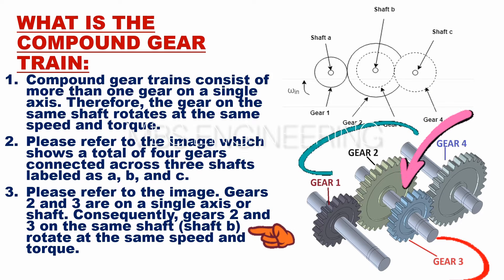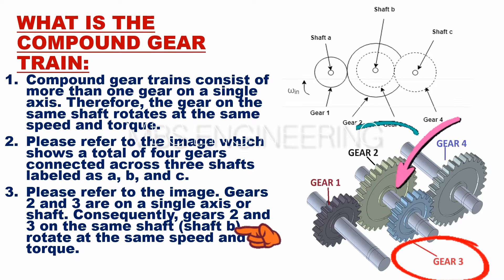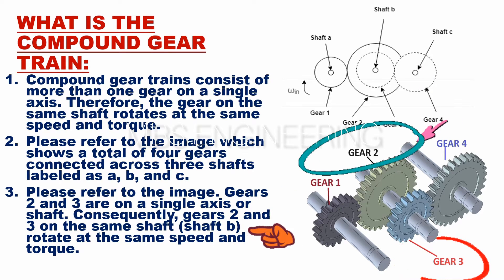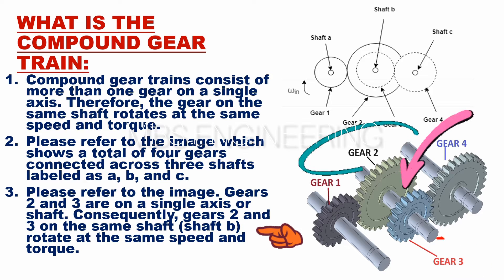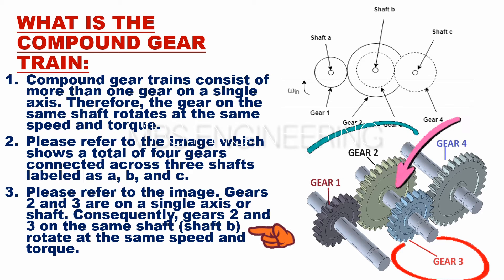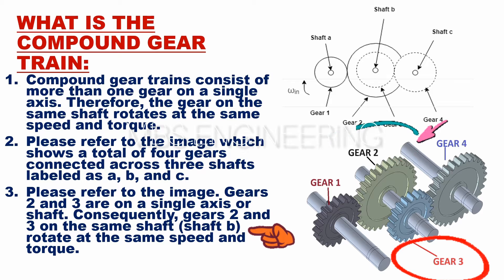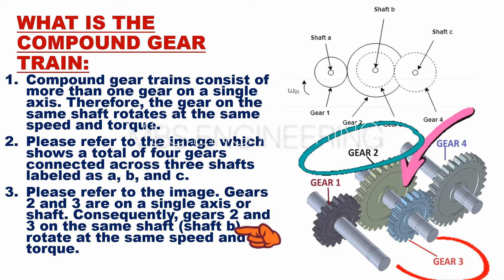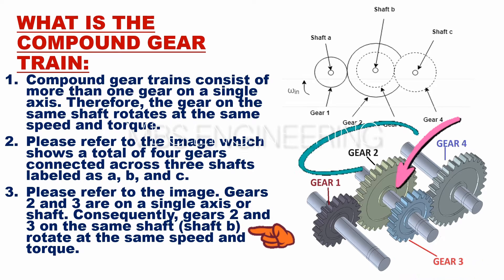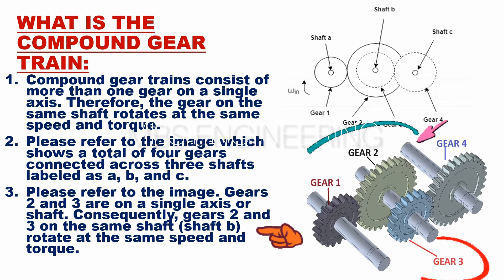The third point — please refer to the image. Gears 2 and 3 are on a single axis or shaft. Consequently, gears 2 and 3 on the same shaft, shaft B, rotate at the same speed and torque.